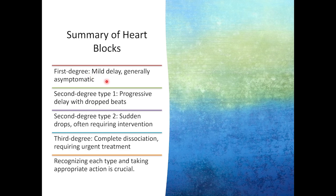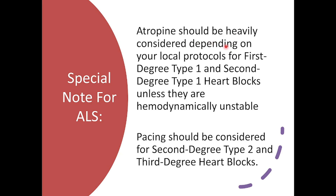Quick summary: a first-degree heart block has a mild delay and is generally asymptomatic. A second-degree type 1 has a progressive delay with occasional dropped QRS complexes. A second-degree type 2 has sudden QRS drops and often requires intervention. A third-degree heart block is a complete dissociation and requires urgent treatment. Atropine should be heavily considered, depending on your local protocols, for first-degree and second-degree type 1 heart blocks unless the patient is hemodynamically unstable — with altered mental status, bad vital signs, hypotension, or confusion. For second-degree type 2 and third-degree heart blocks, move straight to pacing because atropine won't be effective.